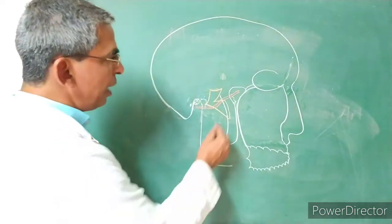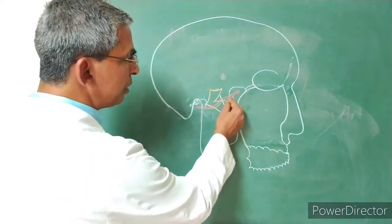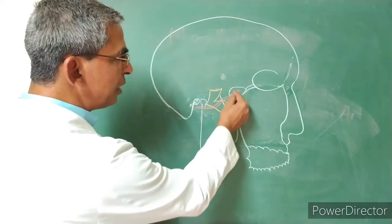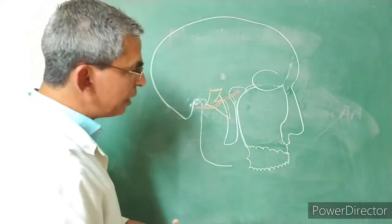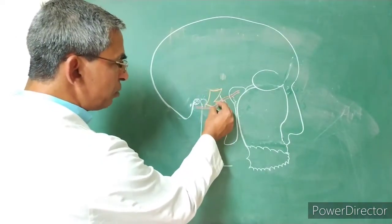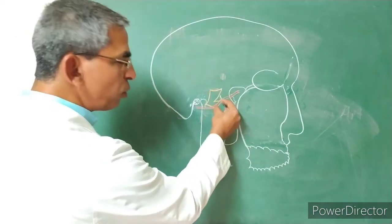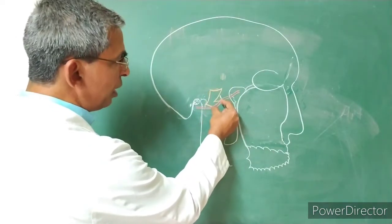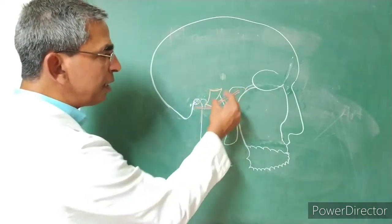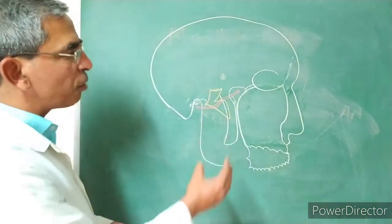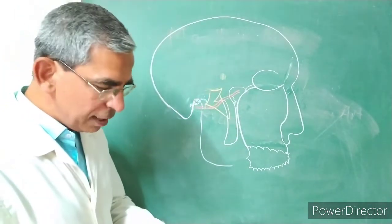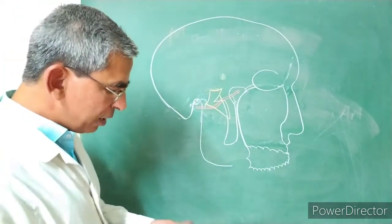The branches of the third part correspond with branches of the maxillary nerve and the pterygopalatine ganglion. The branches of the second part are muscular branches, while branches from the first and third parts enter foramina of the skull and supply nearby structures.